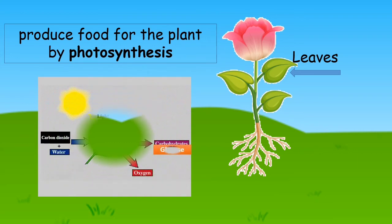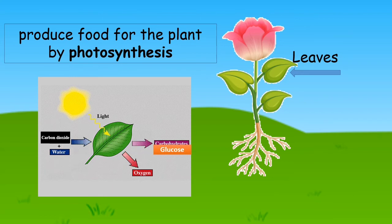Food for the plant by photosynthesis. Photosynthesis is the process by which plants make their own food by combining carbon dioxide plus water in the presence of sunlight and chlorophyll to produce oxygen and glucose.